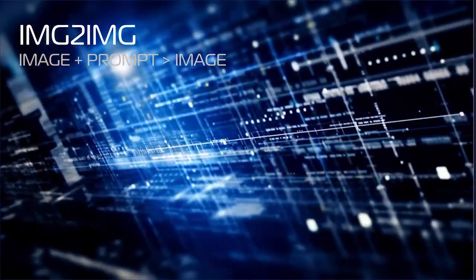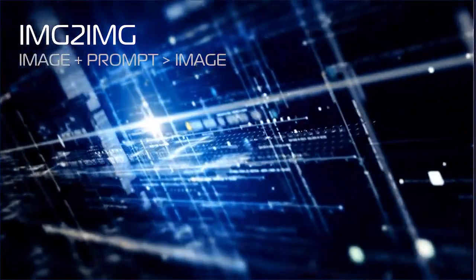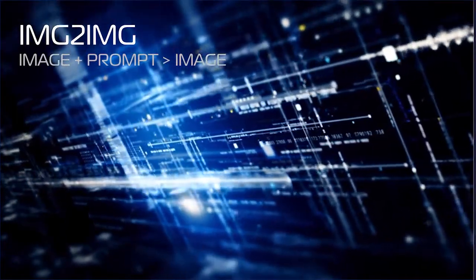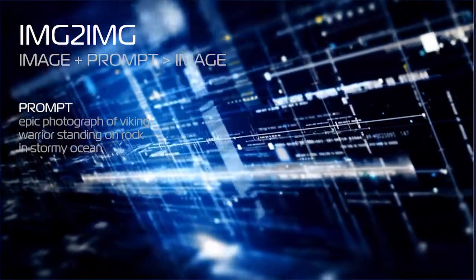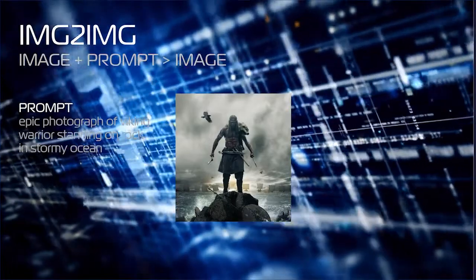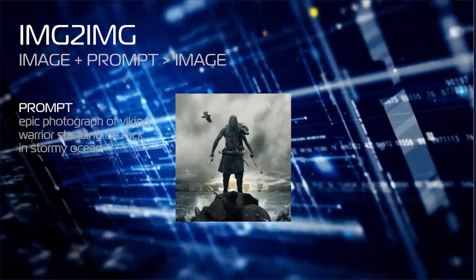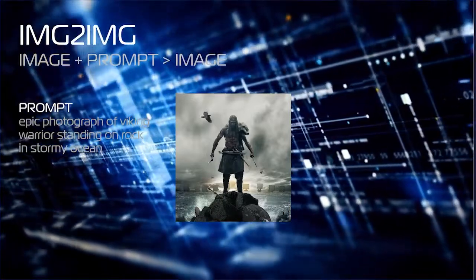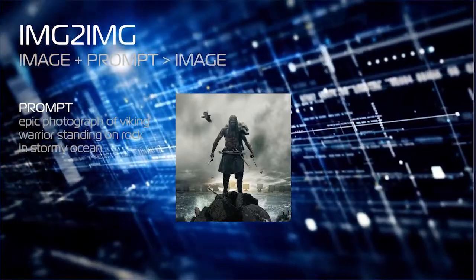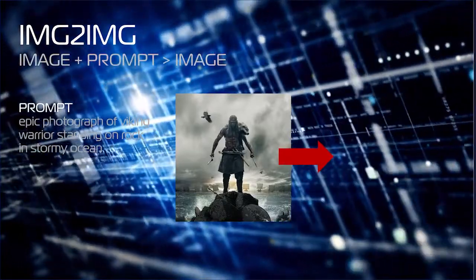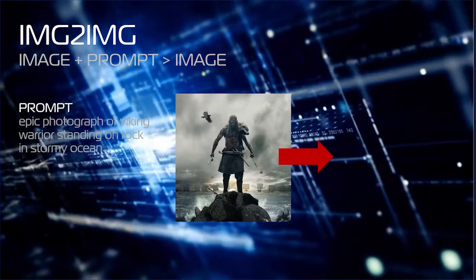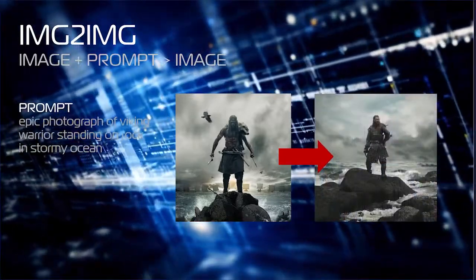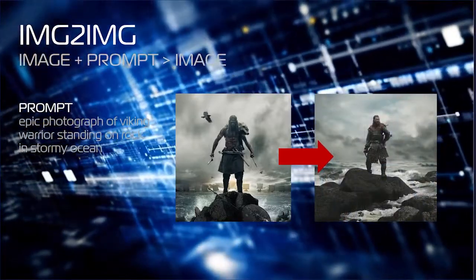The next method is image to image — where we take an existing image as part of your prompt, add text, and generate an image similar to your existing one. We can do this to generate the same image in a different format or style. Here, I've taken the Northman poster and used it as the prompt, adding the text 'epic photograph of a Viking warrior standing on a rock next to the stormy ocean.' As you can see, it generated a completely new and yet somewhat similar image.